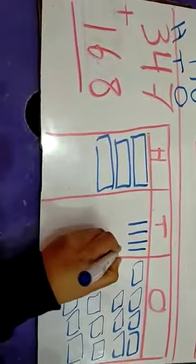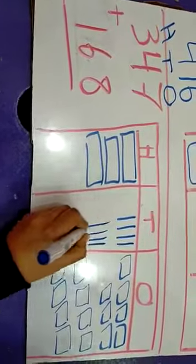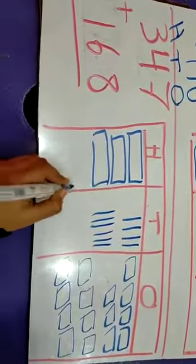6: 1, 2, 3, 4, 5, 6. Hundreds, hundreds, hundreds, 1. Okay,